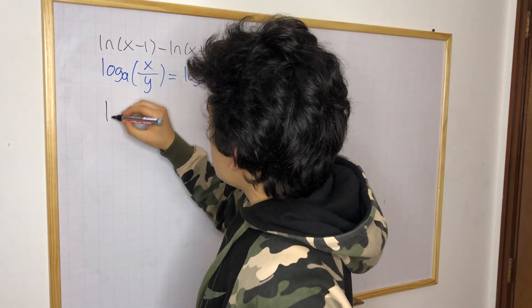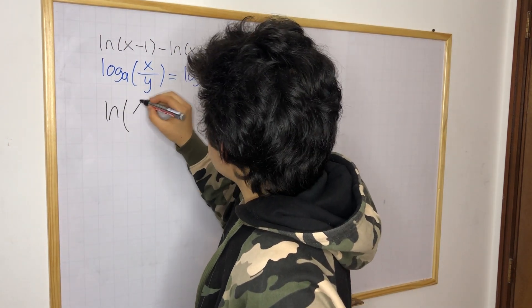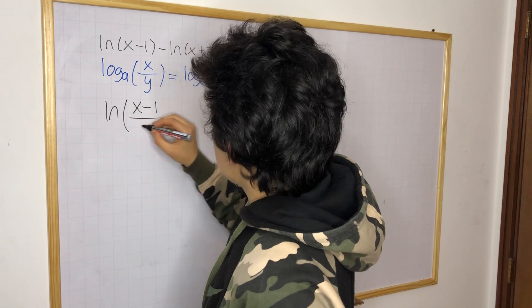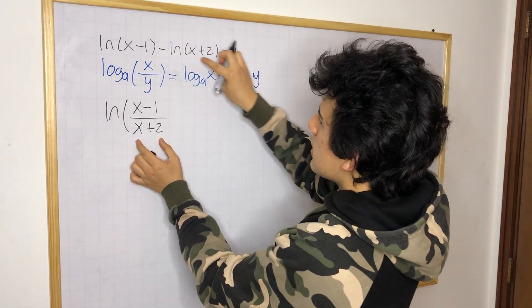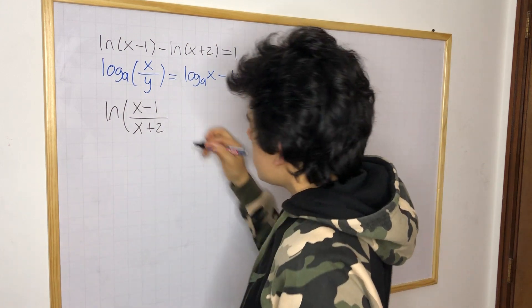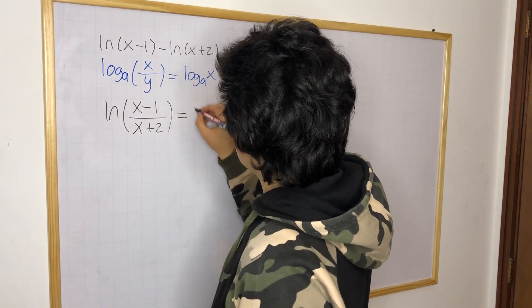So we're gonna have ln of x minus 1 over x plus 2, remember the denominator is the one that carries the negative sign, and this is equal to 1.